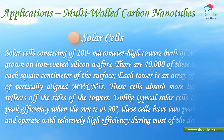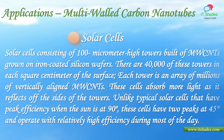Solar cells. Solar cells consisting of 100-micrometer-high towers built of multi-walled nanotubes grown on iron-coated silicon wafers have been developed. There are 40,000 of these towers in each square centimeter of the surface, and each tower is an array of millions of vertically aligned multi-walled nanotubes. These cells absorb more light as it reflects off the sides of the towers. Unlike typical solar cells that have peak efficiency when the sun is at 90°, these cells have two peaks at 45° and operate with relatively high efficiency during most of the day.